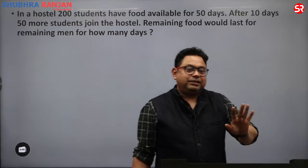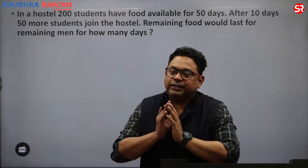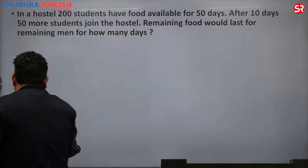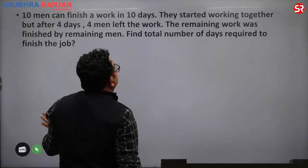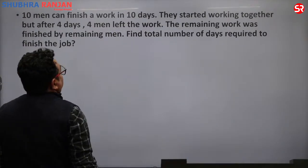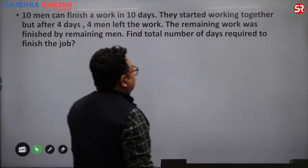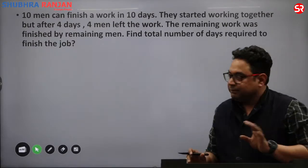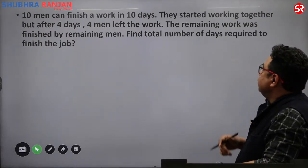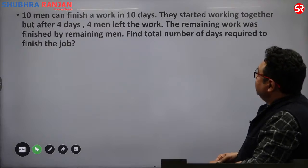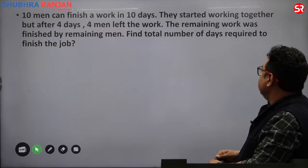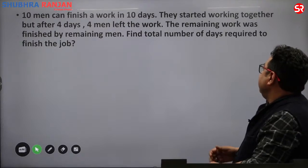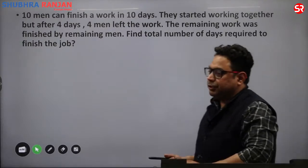This is the same type of question that has come in CSAT 2016 or 2017. It says: 10 men can finish a work in 10 days. They start working together, but after 4 days, 4 men left. The remaining work was finished by the remaining men. Find total number of days required to finish the job.